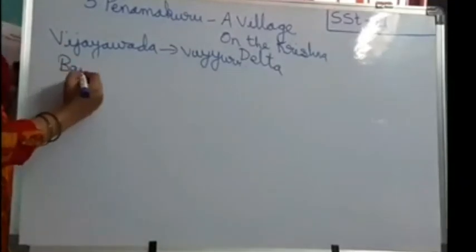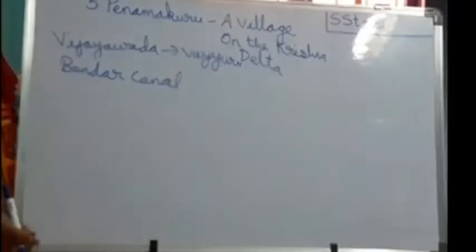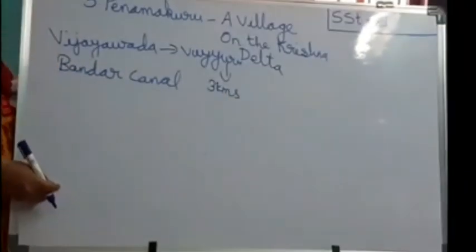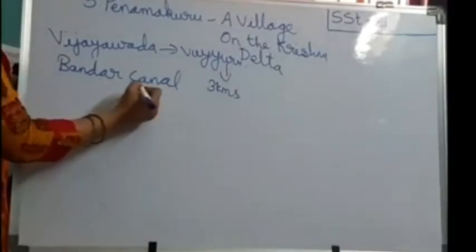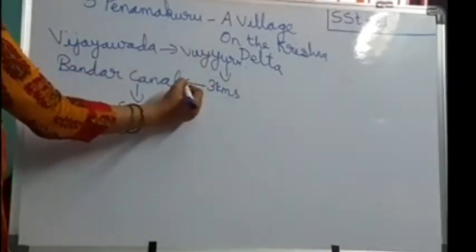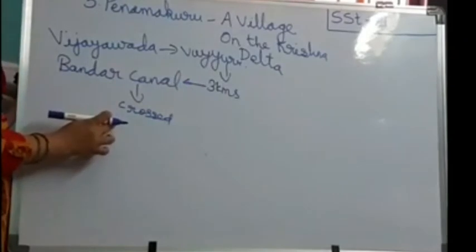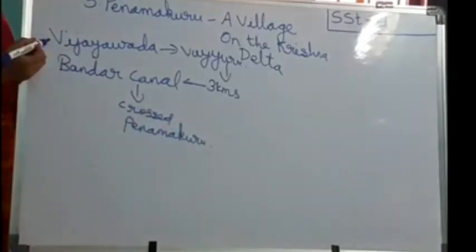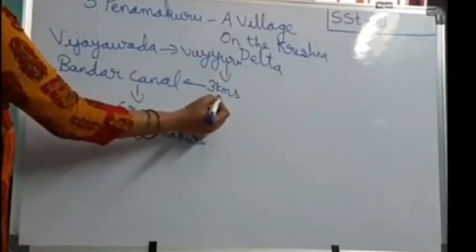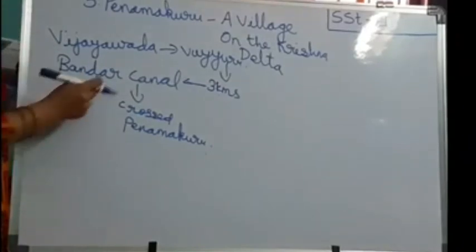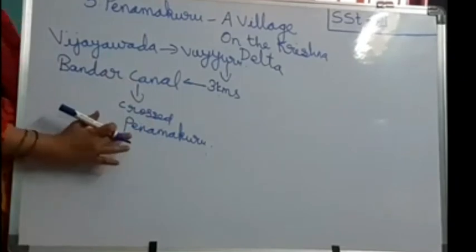Bandar Canal. Our professors, after travelling about 3 kilometers from Uyuru town, crossed the Bandar Canal and reached Penamakuru. So the route was: they went from Vijayawada to Uyuru town, then travelled 3 kilometers from Uyuru. When they were travelling, they crossed the Bandar Canal. After crossing the Bandar Canal, Penamakuru village is there and they reached Penamakuru village.